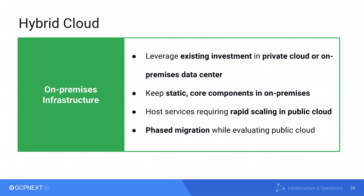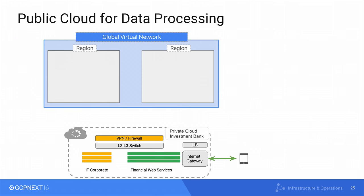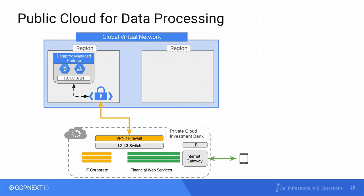Now we'll go into some common hybrid cloud scenarios. In the first scenario, an enterprise has set up their private cloud to host web services and wants to keep it that way. But now they have a need for analytics and log processing, and they don't have great infrastructure for that in their private cloud. So they decide to use GCP — spinning off a managed Hadoop service into public cloud. To feed data from on-premises to this managed Hadoop service, they need a secure connection, and Cloud VPN service makes it really simple to provision that.